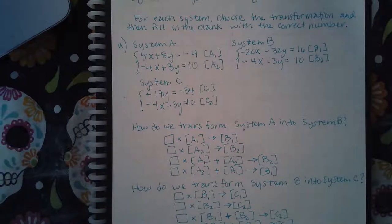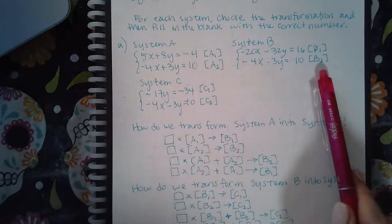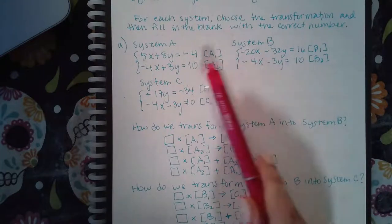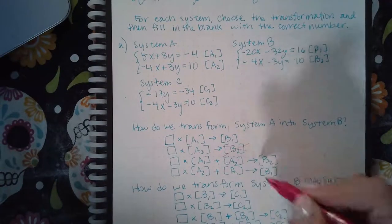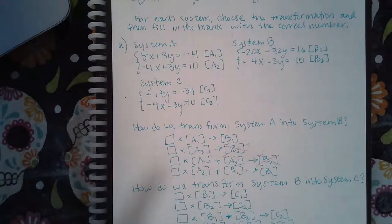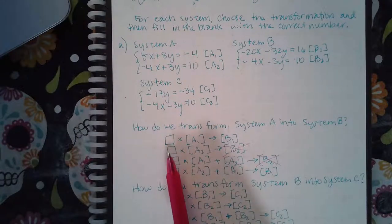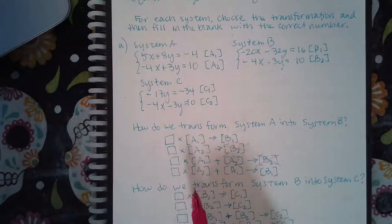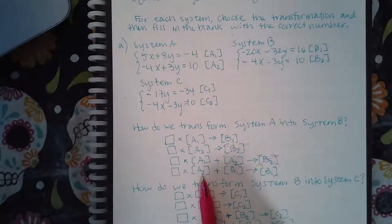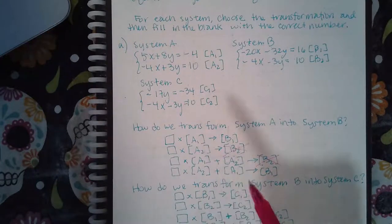The first thing you need to do is identify which line changed. Notice that line two in system A and line two in system B are exactly the same, so it was line one that changed. That automatically tells me that B2 is not what was changed — I can rule out two of those choices. It was B1 that changed.